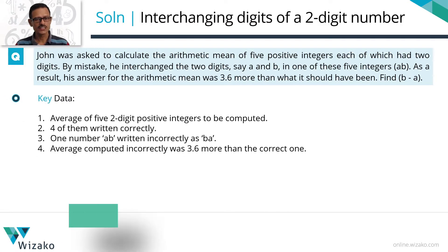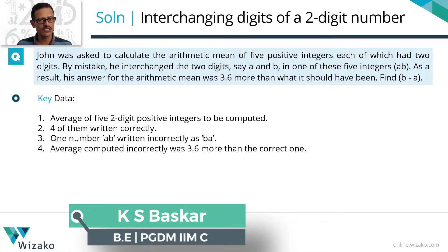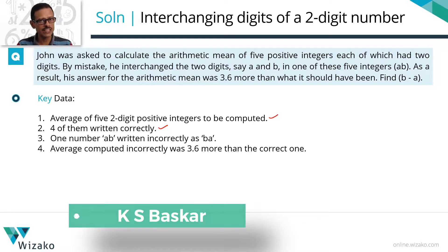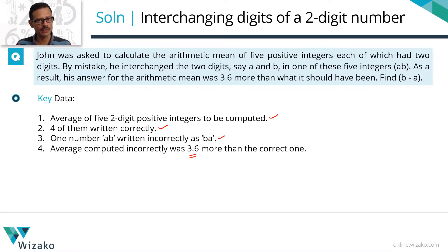Let's jot down the key points. John is supposed to find out the average of five two-digit positive integers. He wrote four of those numbers correctly. One of the numbers, AB, he noted down as BA. On account of this, the average that he got was 3.6 more than what it should have been.